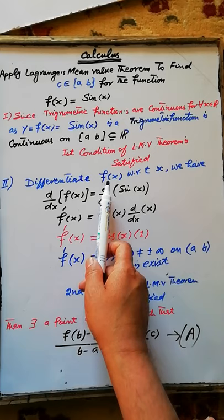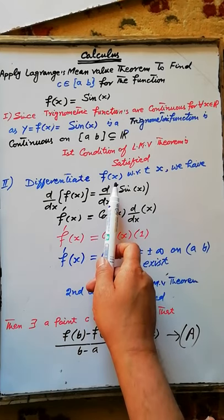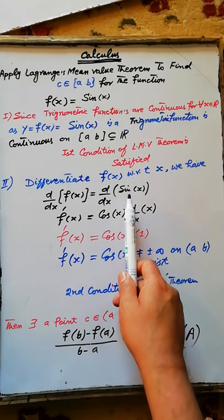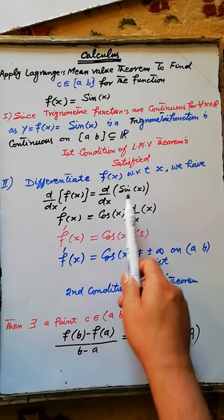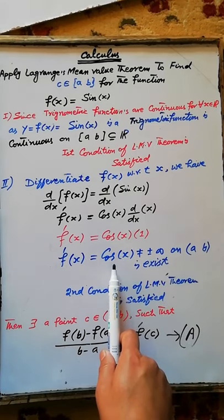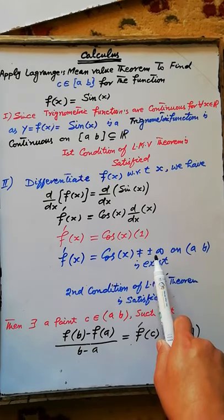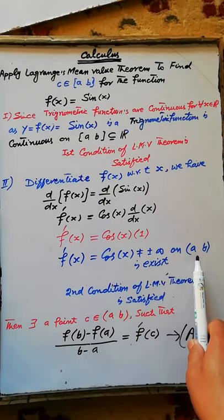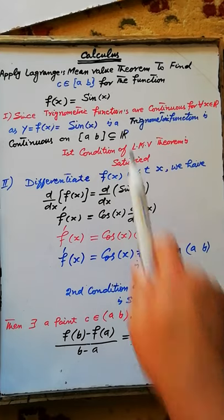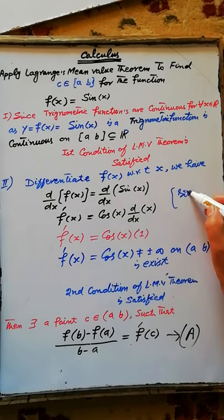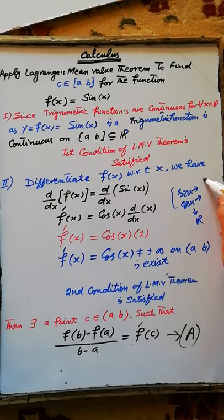Now to check the second condition of the Lagrange Mean Value Theorem, differentiate the function f(x) with respect to x. We have d/dx of f(x) = d/dx of sin(x). The derivative of sin(x) is cos(x), and the derivative f'(x) = cos(x) is not equal to plus or minus infinity on the given open interval, because the range of sin(x) and cos(x) for x belonging to the real numbers is the closed interval from -1 to 1.